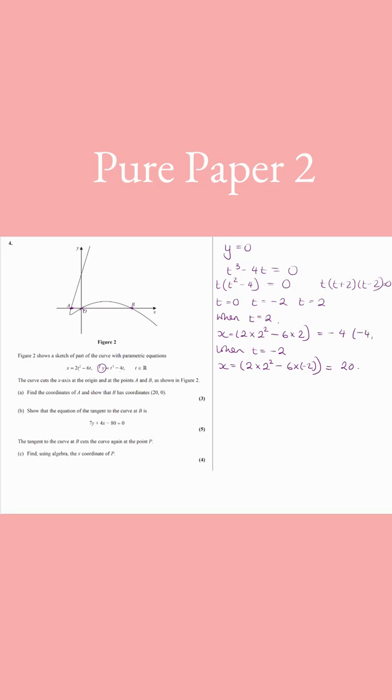So this is going to be your minus 4, 0, which is your point A, and point B, which is 20, 0.